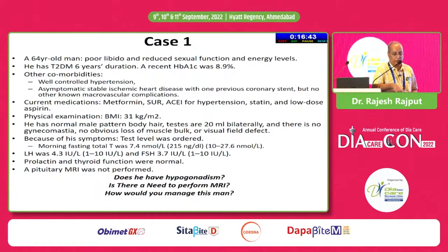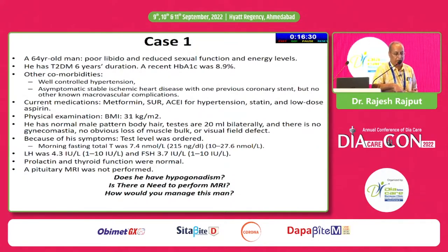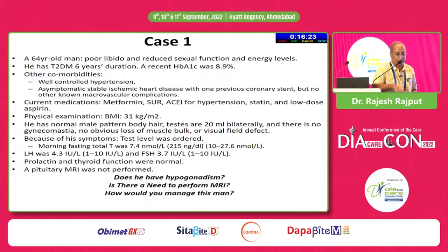Because of these symptoms, a testosterone level was ordered, found to be 7.4 nanomoles per liter, or 215 nanograms per deciliter — the more common unit reported by labs. LH and FSH are within normal limits, thyroid and prolactin are normal, and an MRI has not been performed. Three important questions: does this patient have hypogonadism, do we need to perform an MRI, and how should we manage him?